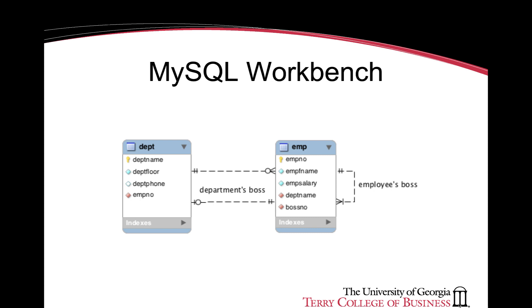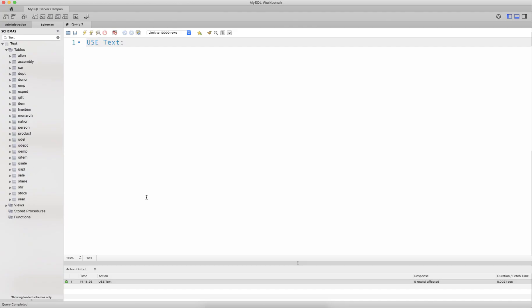The one-to-many relationship is created by the foreign key department name being present in the employee table. The one-to-one relationship is created by employee number being present in the department table. Corresponding to these entities and attributes, we can see that in table form the data looks as follows.